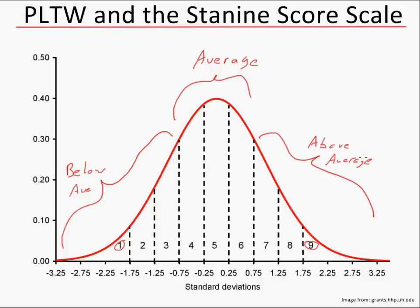That's how they're broken up, and the basis for breaking them up is standard deviations. The next part I'm going to show you is how to derive the stanine scales, and we utilize something called a z-score. We're actually able to determine the z-scores by knowing the population mean and the population standard deviation.